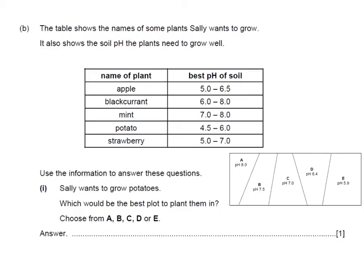The table shows the names of some plants that Sally wants to grow. It also shows the soil pH the plants need to grow well. Use the information to answer these questions. Sally wants to grow potatoes. Which would be the best plot to plant them in? Well when we have a look at the table, potatoes grow in a pH of 4.5 to 6.